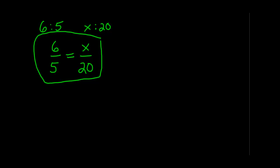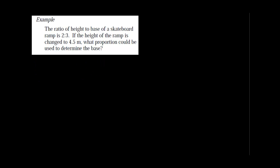Okay, this is an example. The ratio of height to base of a skateboard ramp is 2 to 3. Before we do anything else, let's quickly draw that. So here's a skateboard ramp. I'm not very good at drawing it, but here it is. Looks more like a triangle.